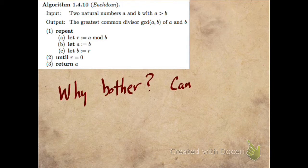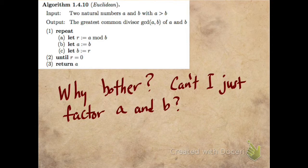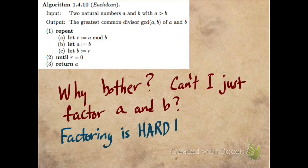You might ask, why bother? Can't I just factor A and B if I want to compute the greatest common divisor of A and B? Well, you can if A and B are small enough, but in general, factoring is a hard, hard problem. This algorithm allows you to compute GCDs using addition, subtraction, and multiplication.